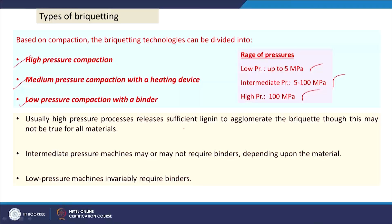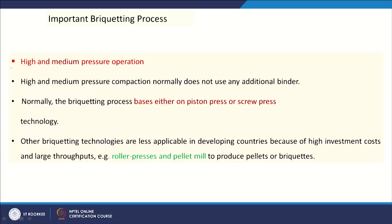Low pressure is up to 5 MPa, intermediate pressure is 5 to 100 MPa, and high pressure means 100 MPa or more. At high pressure, sufficient lignin is released to agglomerate the particles into briquettes. Intermediate pressure machines may or may not require binders depending on the material, while low pressure machines positively require binders.